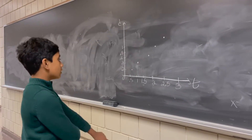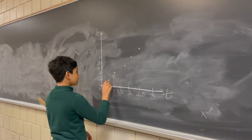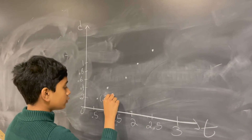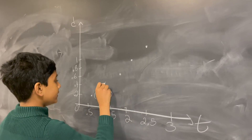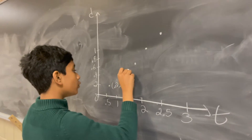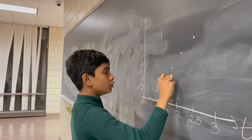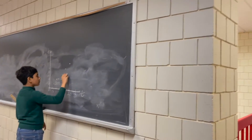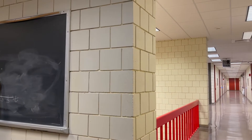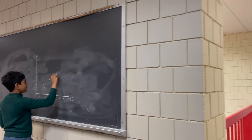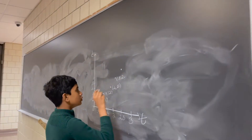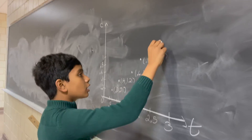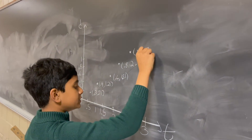This is a graph of all the data points accumulated: 0.2 comma 0.71, 0.4 comma 1.21, 0.6 comma 1.81, 0.8 comma 2.17, and 1 comma 2.56.